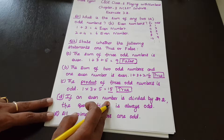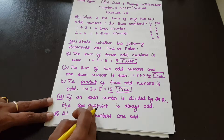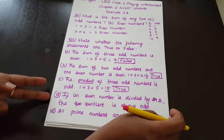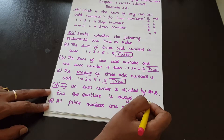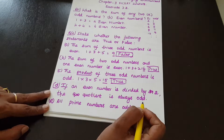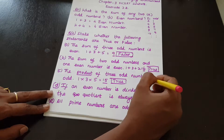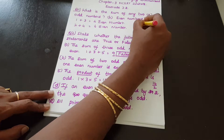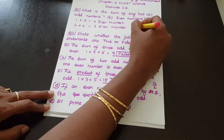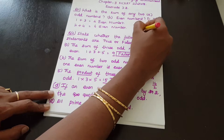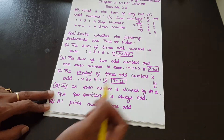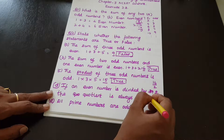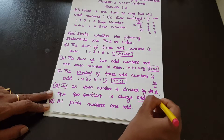Next statement: If an even number is divided by 2, the quotient is always odd. For example, 16 divided by 2 equals 8. But 8 is an even number, not odd. So the statement is false.